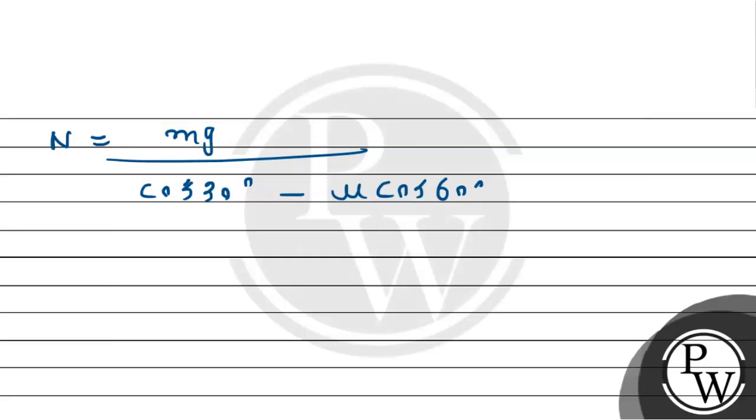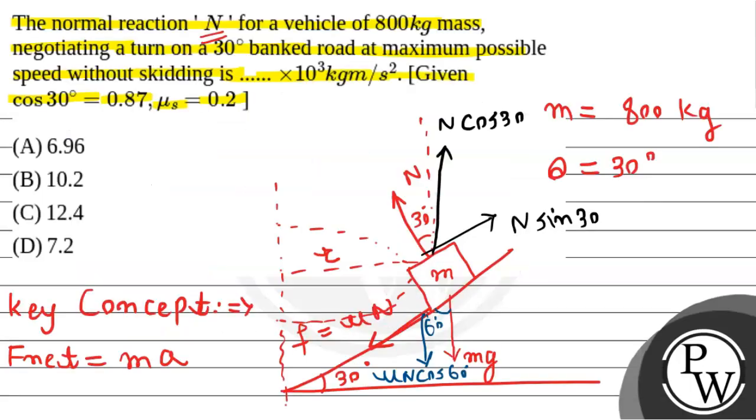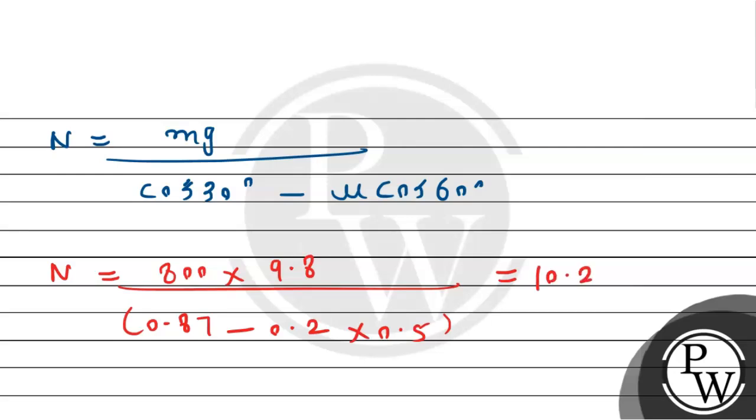Now we substitute the values. N equals mass 800 multiplied by g value 9.8 meter per second square, divided by cosine 30, which is 0.87, minus coefficient of friction 0.2 multiplied by cosine 60. Solving this, we get approximately 10.2 to 10.3 times 10 to the power 3 kg meter per second square. Therefore, this is the required answer to our question.